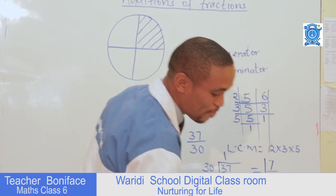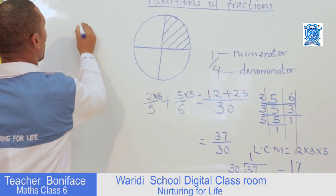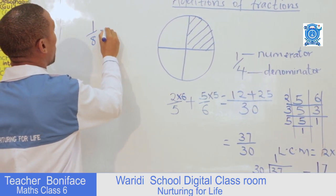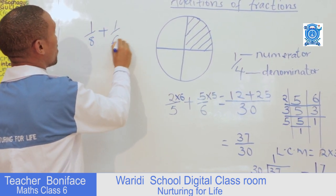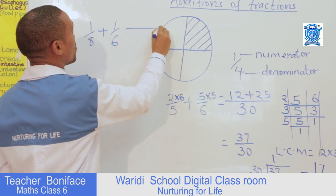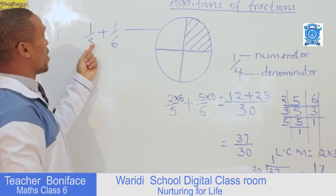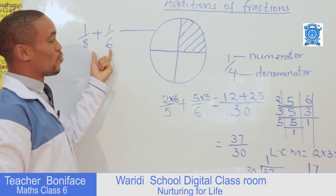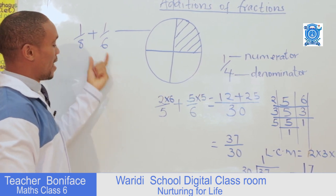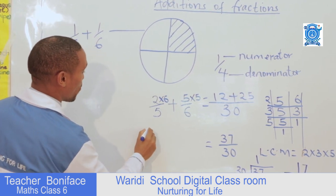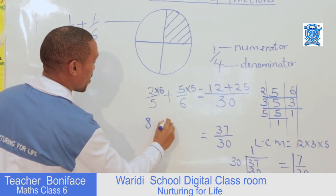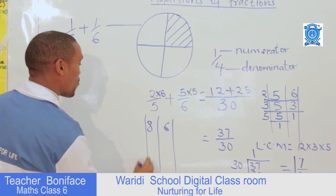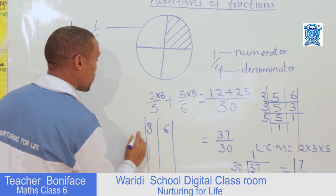Let's see if you can handle another example: one-eighth plus one-sixth. One-eighth plus one-sixth. I think now it will be very simple for us. Eight and six — remember, those are our two denominators, and we need to find their LCM.